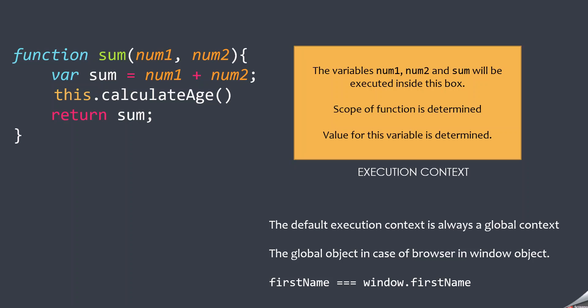Where do global variables and global functions get stored and executed? They are stored and executed in the global execution context. In the case of a browser, the global object is the window object. So whenever you create a global variable, it gets attached to that global object as its property. And similarly, when you create a function, it gets attached to the global object as its method.